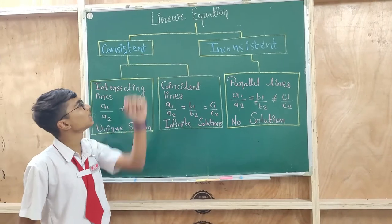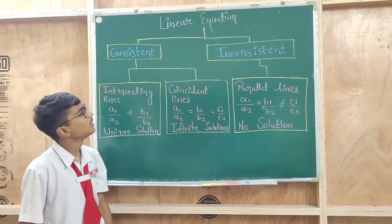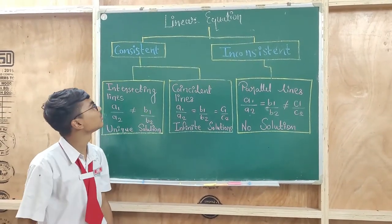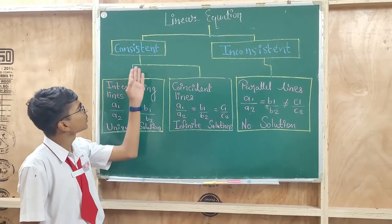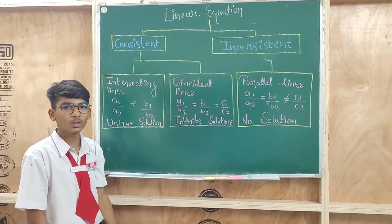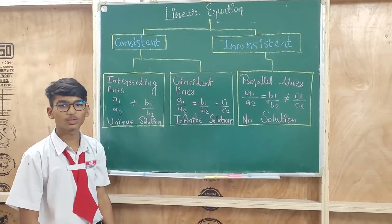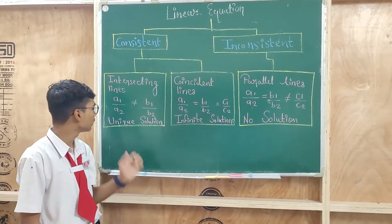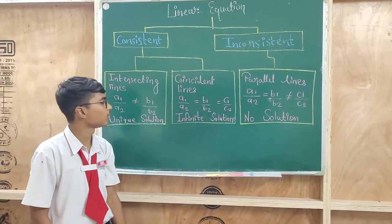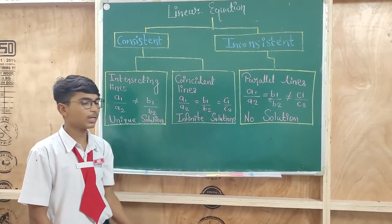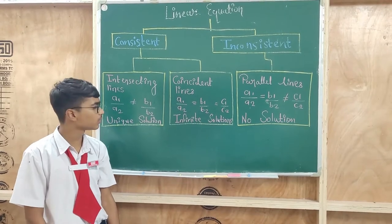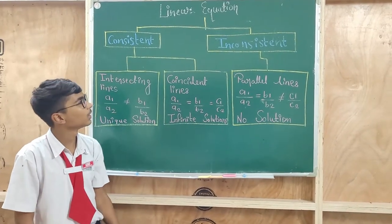I will lecture about linear equations. Linear equations have two types: consistent and inconsistent. Consistent has two types. First, intersecting lines, where a1 upon a2 is not equal to b1 upon b2 — it has a unique solution. Second type, coincident lines, where a1 upon a2 is equal to b1 upon b2 is equal to c1 upon c2 — it has infinite solutions.